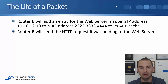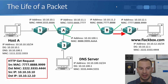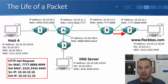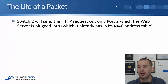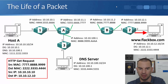Router B will then send the HTTP request it was holding to the web server. The original source IP is still 10.10.10.10 on host A, the destination IP is still 10.10.12.10 on the web server. The MAC addresses get updated with source MAC 7.8.9 and destination MAC 2.3.4. Switch 2 will send the HTTP request out only port 2, which the web server is plugged into, and the HTTP GET request will reach the web server.